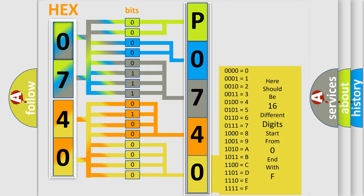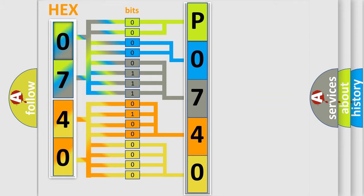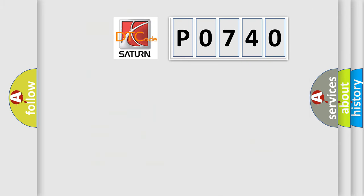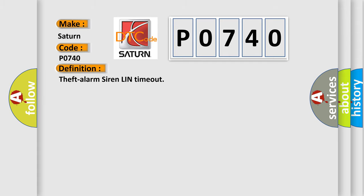We now know in what way the diagnostic tool translates the received information into a more comprehensible format. The number itself does not make sense to us if we cannot assign information about what it actually expresses. So, what does the diagnostic trouble code P0740 interpret specifically for Saturn? The basic definition is: Theft alarm siren LIN timeout.